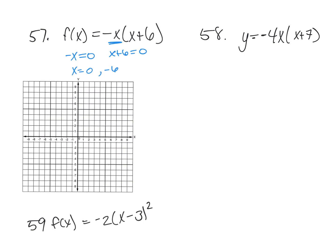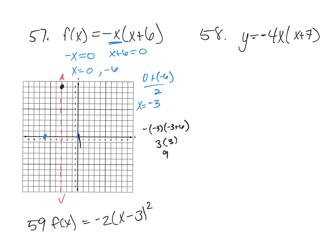So zero and negative six, which means my vertex is halfway between those two points. So negative six plus zero divided by two is negative three. So my axis of symmetry is at negative three. And I'm going to plug that in. Negative negative three times negative three plus six, and that gives us three times three, which is nine. And so it's up here, and there's our parabola.